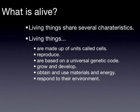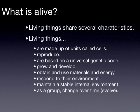Take a couple of moments and think about these characteristics. You can find a listing of these characteristics and some descriptions on pages 17 to 20 in your textbook. Living things are made up of units called cells, reproduce, are based on a universal genetic code, grow and develop, obtain and use materials and energy, respond to their environment, maintain a stable internal environment, and as a group, change over time. This is how we know what is alive and what is not.